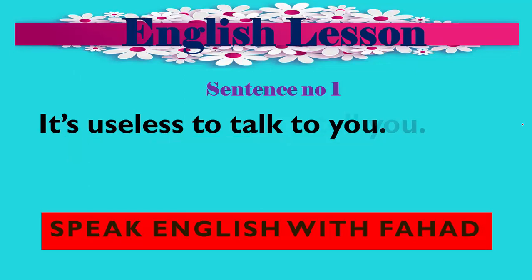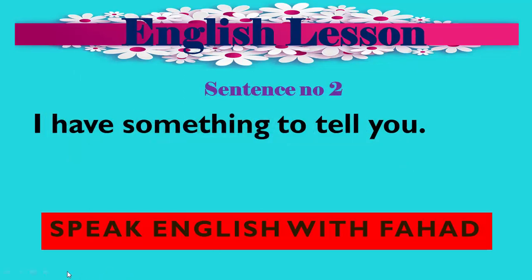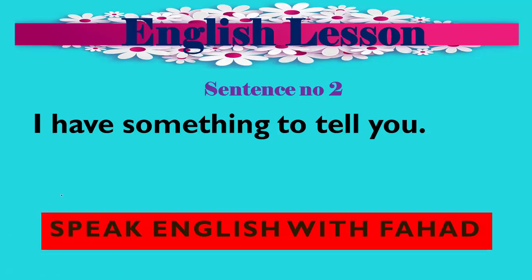Moving to sentence number 2: 'I have something to tell you.' Here 'have' is the main verb, and 'to tell' is the infinitive. In Urdu: میرے پاس آپ کو بتانے کے لیے کچھ ہے (I have something to tell you). Here 'have' is in its first form and this also shows present situation.